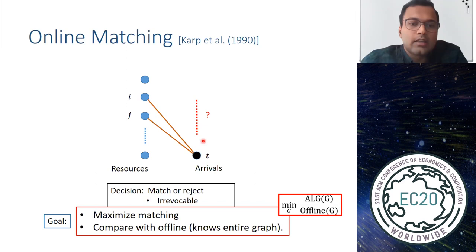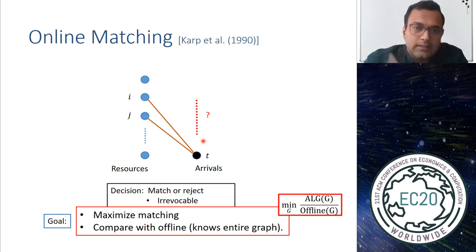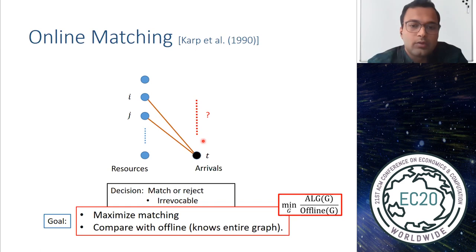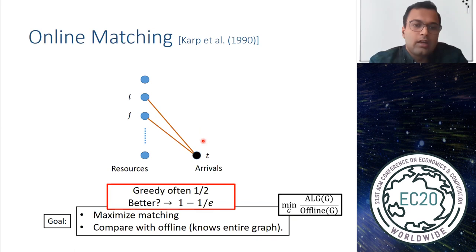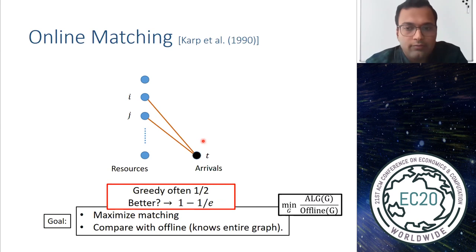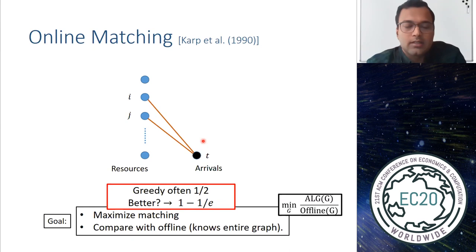The goal is to find a maximum matching over all arrivals. To understand whether one algorithm does better than another, we use offline algorithms as a benchmark — an offline algorithm knows the entire graph and all arrivals in advance. We hope to find an online algorithm with a good performance gap against this offline benchmark. The greedy algorithm gives a competitive guarantee of half, and Karp-Vazirani-Vazirani showed you can get 1 − 1/e, which is also best possible.